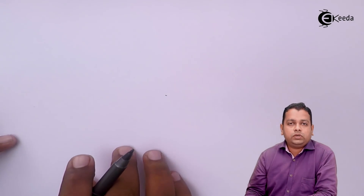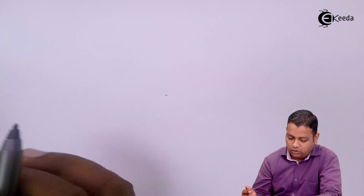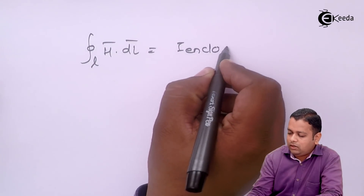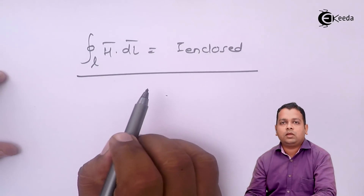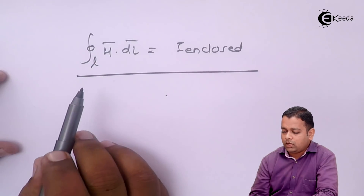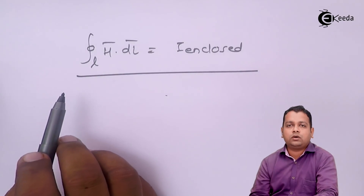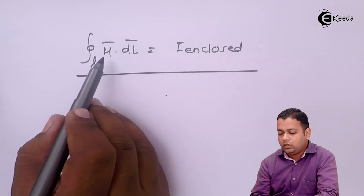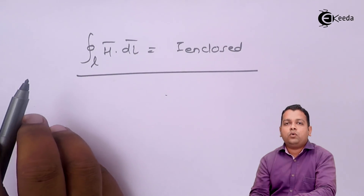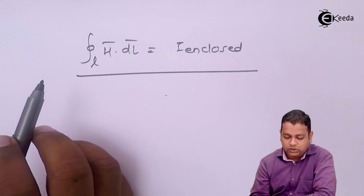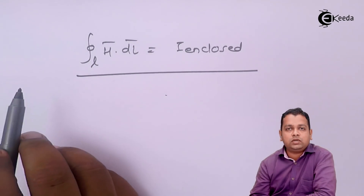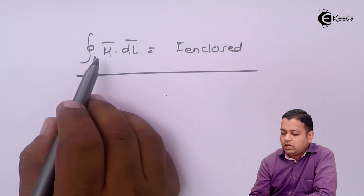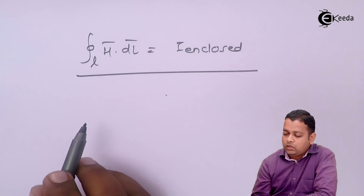The previous video covered Ampere's Circuital Law. According to Ampere's Circuital Law, the closed line integral of H-bar dot dl-bar equals I-enclosed. This law is useful when the current distribution is uniform and the closed path follows a symmetrical shape. If the current distribution is not symmetrical and the path of integration is also not symmetrical, we cannot directly apply the law and must split the integral into parts.